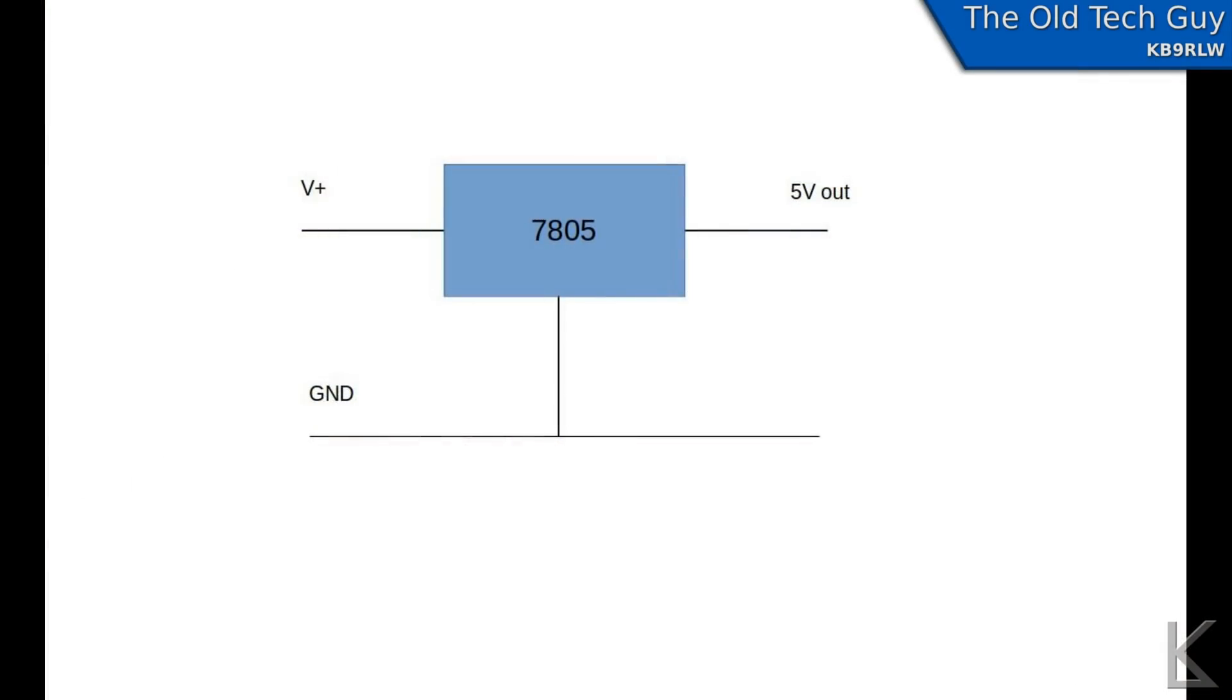The 7805 voltage regulator, like all of the 7800 series regulators, has three pins. An input pin, where your source voltage goes. The center pin is ground, and the output pin, where your regulated voltage comes out.